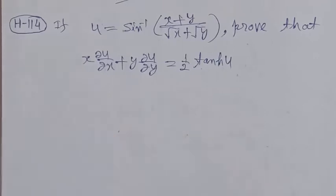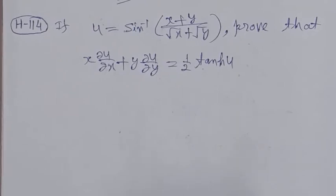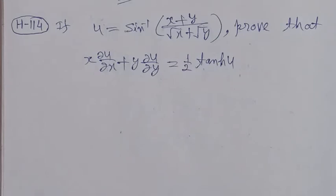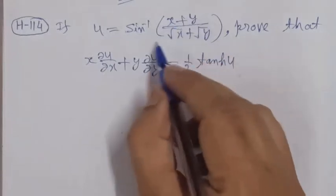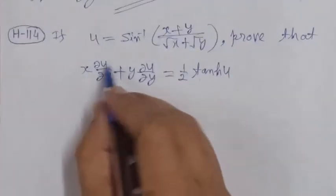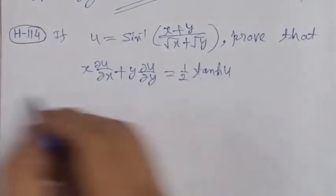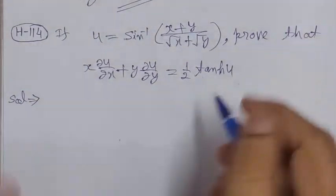This problem is from differential calculus, Euler's theorem chapter. For a homogeneous function, if u is equal to sin inverse of (x plus y) upon square root x plus square root y, prove that x del u over del x plus y del u over del y is equal to 1 by 2 tan hyperbolic u.